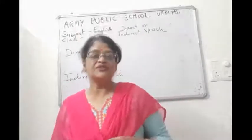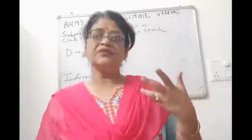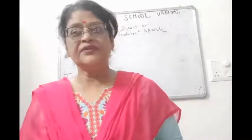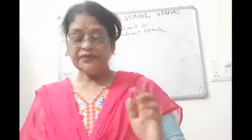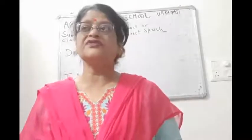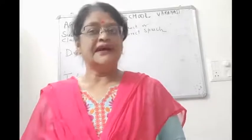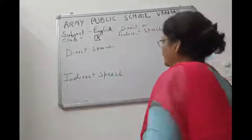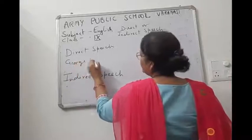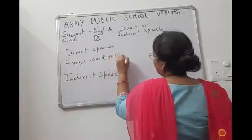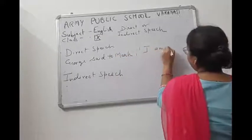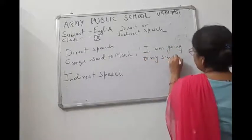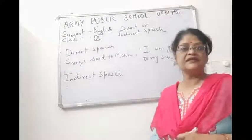For your information, when you write the exact words of the speaker, they are written in inverted commas. Whatever is written in inverted commas, that is the direct speech. For example: George said to Mark, 'I am going to my school.' Close the inverted comma and put a full stop inside the inverted comma.